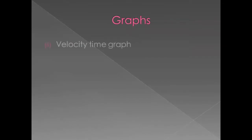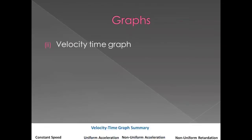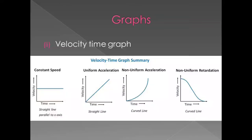Same is the velocity-time graph. In a velocity-time graph, if it is parallel to the time axis, velocity is constant. Second, if it is inclined to the time axis, velocity is increasing uniformly. Third, if it is a curve, velocity is increasing non-uniformly.